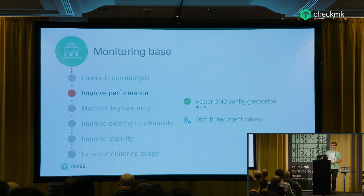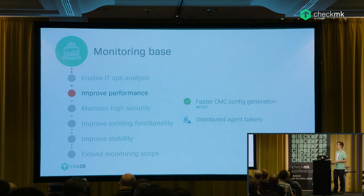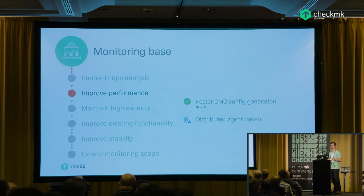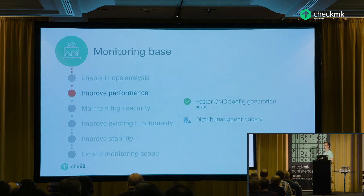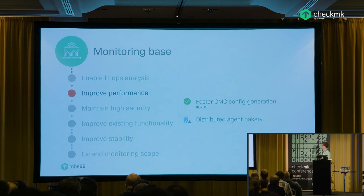Another performance improvement is the agent bakery. We worked on this over the past year as we discussed at our last conference — agents can now also be distributed using slave sites, so agents aren't always picked up from the central point. Overall, updates can run much quicker and smoother because they don't have to travel across the entire network.